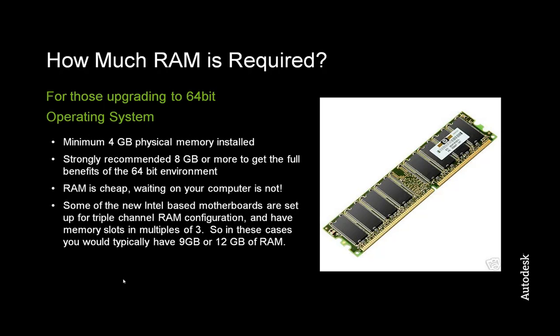For those upgrading to a 64-bit operating system, a minimum of 4GB of physical memory installed is required. However, we strongly recommend at least 8GB or more to get the full benefits of the 64-bit environment. The key here is that we don't want anyone to avoid upgrading to a 64-bit OS just because they only have 4GB of RAM. You should still make the jump to 64-bit if you have the option, even if you're still on 4GB of RAM.